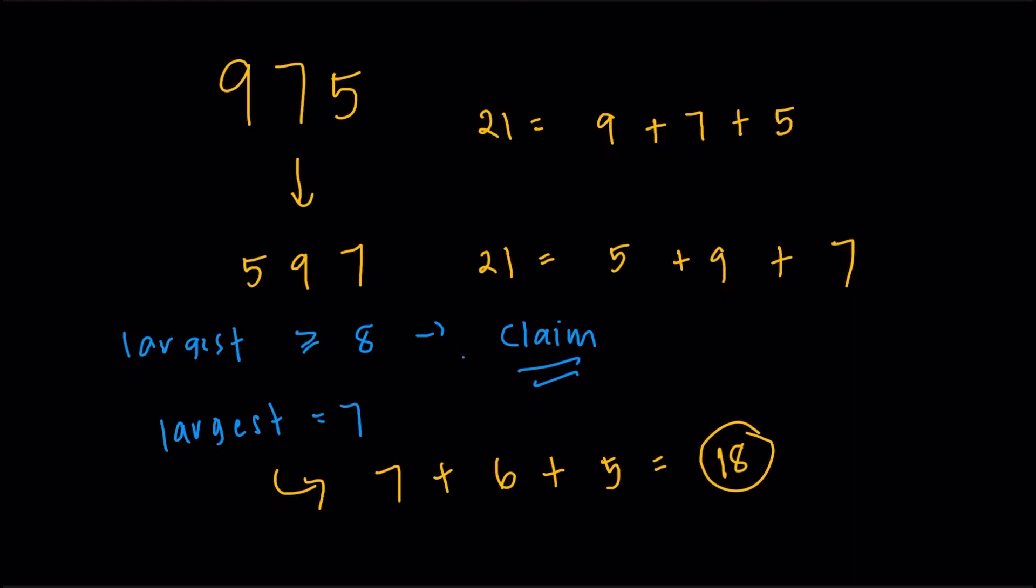Now, obviously, it's not going to work if the largest is 6, 5, 4, 3, 2, or 1, because the sum is going to get smaller. And that's pretty much enough for us to say that the largest can't be less than or equal to 7. So the claim must be correct. The highest digit must be greater than or equal to 8.